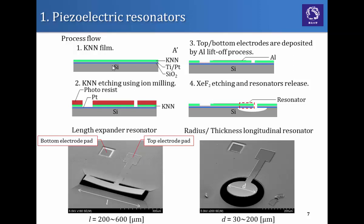And these figures summarize the process flow of the resonators. We removed the KNN by using ion milling and we deposited the top and bottom electrodes using aluminum lift-off processes. And finally, we released the resonators using xenon difluoride etching.